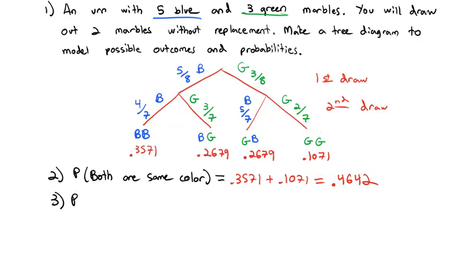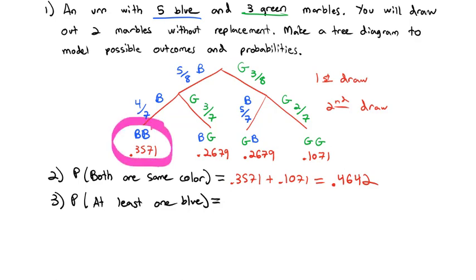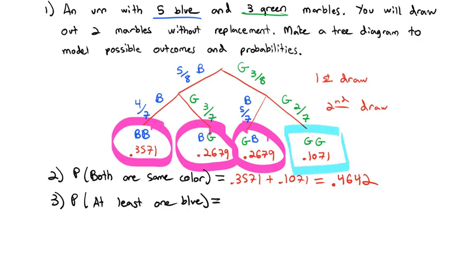One more example: what's the probability that we get at least one blue? We could add the first three options which each have at least one blue, but it's easier to use the complement. We know all probabilities sum to one, so we subtract the only path that doesn't satisfy our condition — the green-green path at 0.1071 — giving a probability of at least one blue of 0.8929.